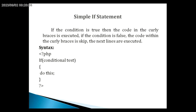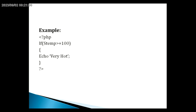The first is the simple if statement. In its syntax, the condition is tested — if true, the 'do this' statement is executed; otherwise, control skips out of the curly braces. For example, if the temperature is greater than or equal to 100, print 'very hot'; otherwise, control skips out of the curly braces.